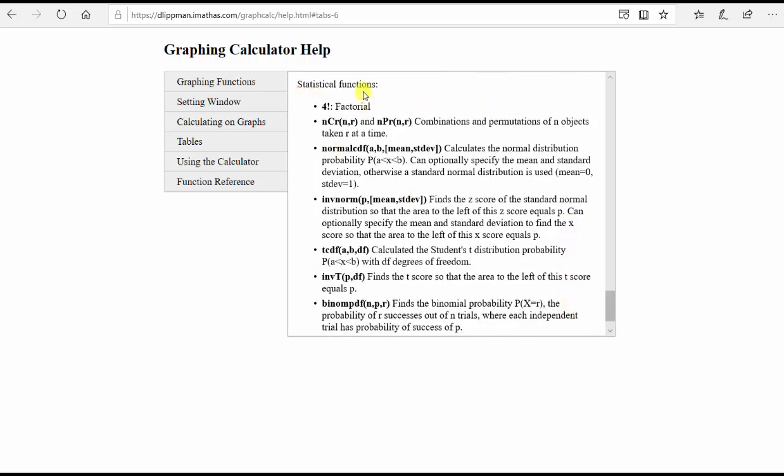Under statistical functions, we can see the notation for factorial, permutation, and combination, as well as several other functions.